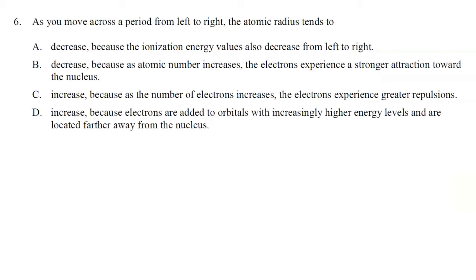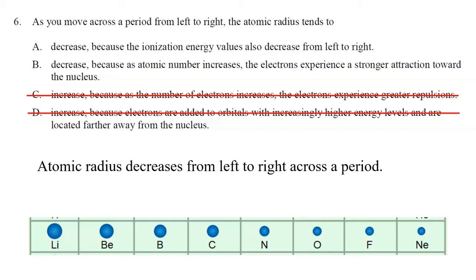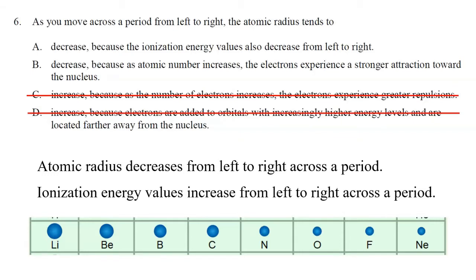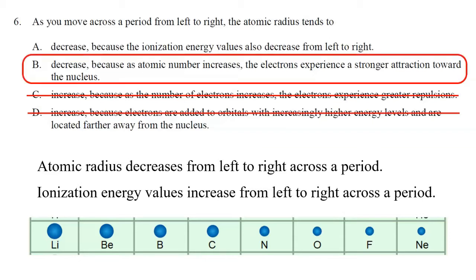Number six: as you move from left to right across a period, the atomic radius tends to decrease, so the answer is either A or B. Ionization energy — the energy required to remove an electron from the outer shell of an atom — increases from left to right across a period, as it becomes more difficult to remove an electron from these smaller atoms. So the correct answer is not A but rather B. The reason for the decrease in atomic radius is that electrons experience a stronger attraction toward the nucleus: the valence electrons are in the same energy level, but the number of protons increases, creating a stronger pull.